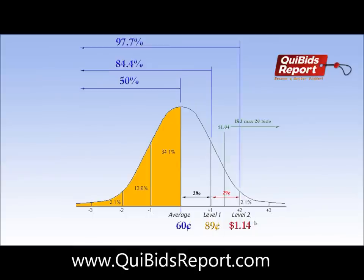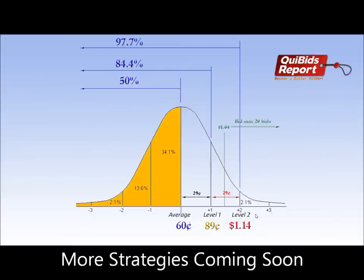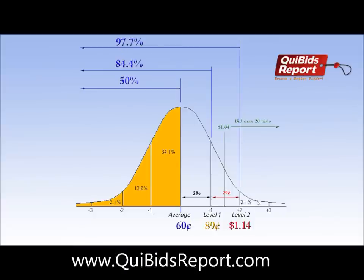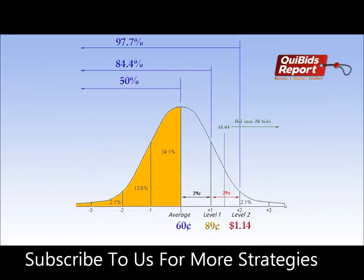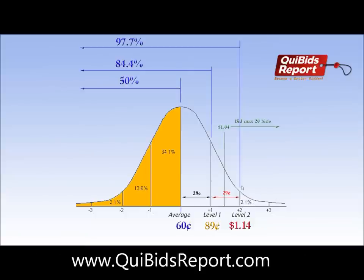The level one upper limit is at $0.89. The level two upper limit is $1.14 — that's just $0.29 higher; you keep adding $0.29 to get each level. That means 97.7% of all auctions we've observed have closed by $1.14, so only 2.3% of auctions close above that point. This area represents 2.1% and about 0.2% of auctions will make it past that point — very infrequent, so we're not really concerned with that area.